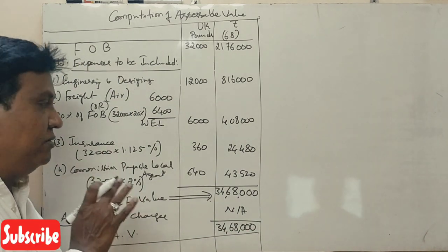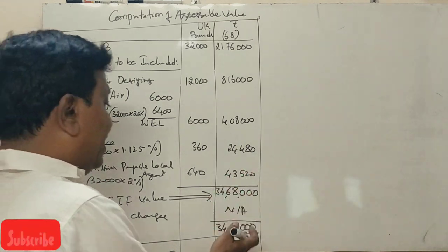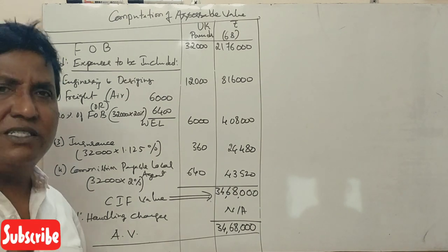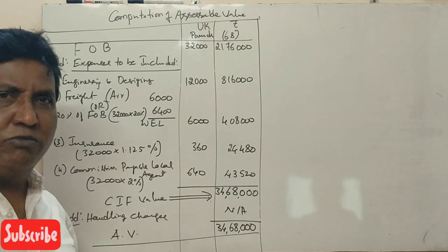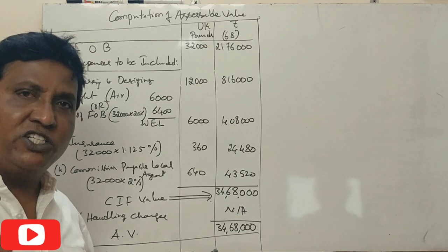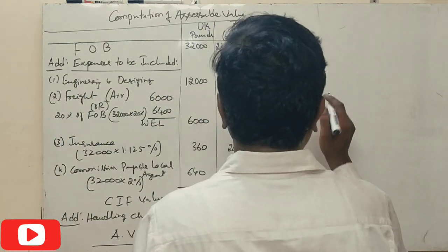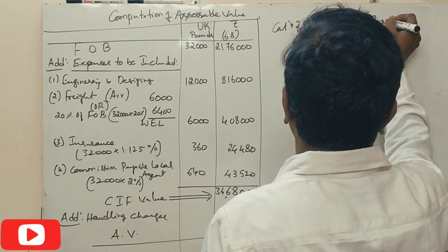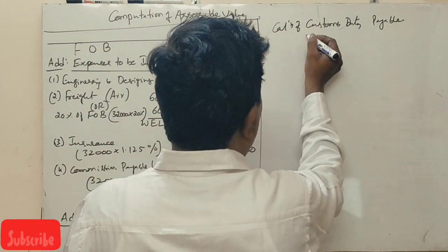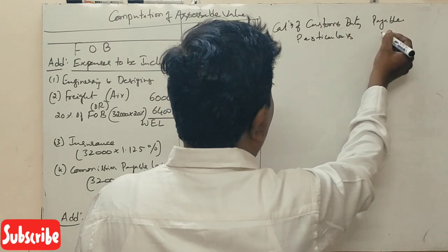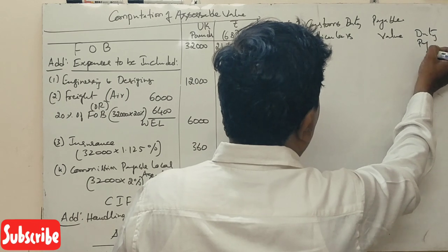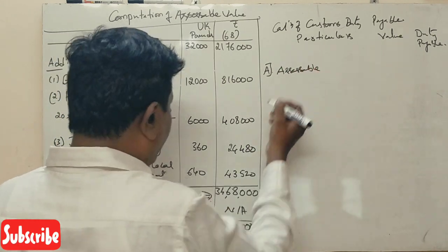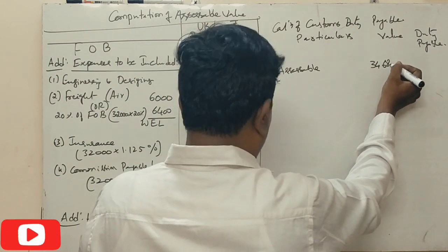Six marks. Now calculate customs duty. Information: basic customs duty, IGST, social welfare. This is duty payable. First, particular, value, duty payable. Point A is assessable value: 34,68,000 rupees.